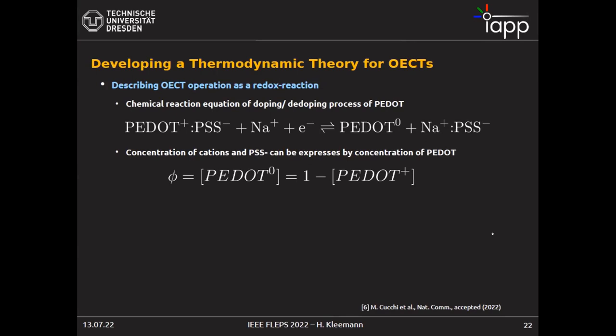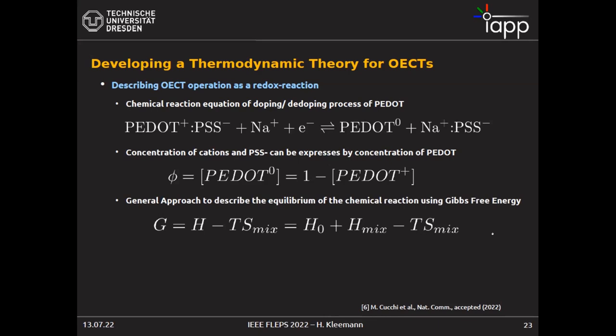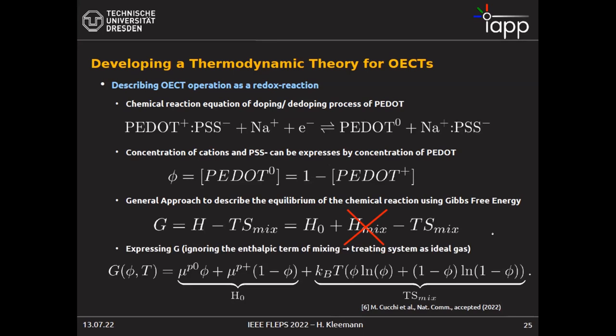We applied Boltzmann's thermodynamic theory through the Flory-Huggins model, writing down the Gibbs free energy as a sum of the enthalpy and entropy of the system. To begin with, we completely ignored the enthalpic interaction term — which accounts for Coulomb repulsion between anions or attraction between anions and cations — treating the system as an ideal gas. In this ideal gas situation we represent entropy simply by the probability of finding a certain species, which is the most fundamental equation to model this thermodynamic system.